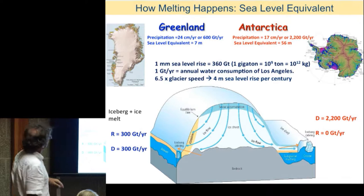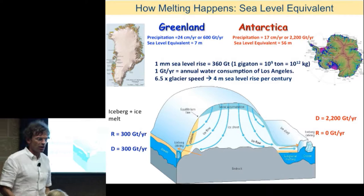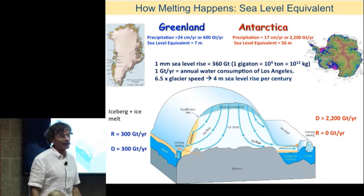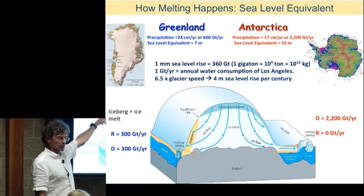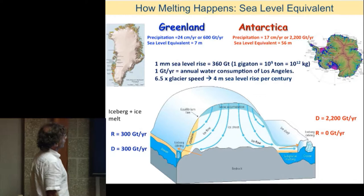Some numbers for those of you who like a little calculus: one millimeter of sea level rise equals 360 gigatons of land ice taken from the land and thrown into the ocean. One gigaton is 10 to the power of 9 tons — one trillion kilos. To put things in perspective, the city of Los Angeles uses one gigaton of water annually. So one millimeter sea level rise is 360 times the water consumption of LA.